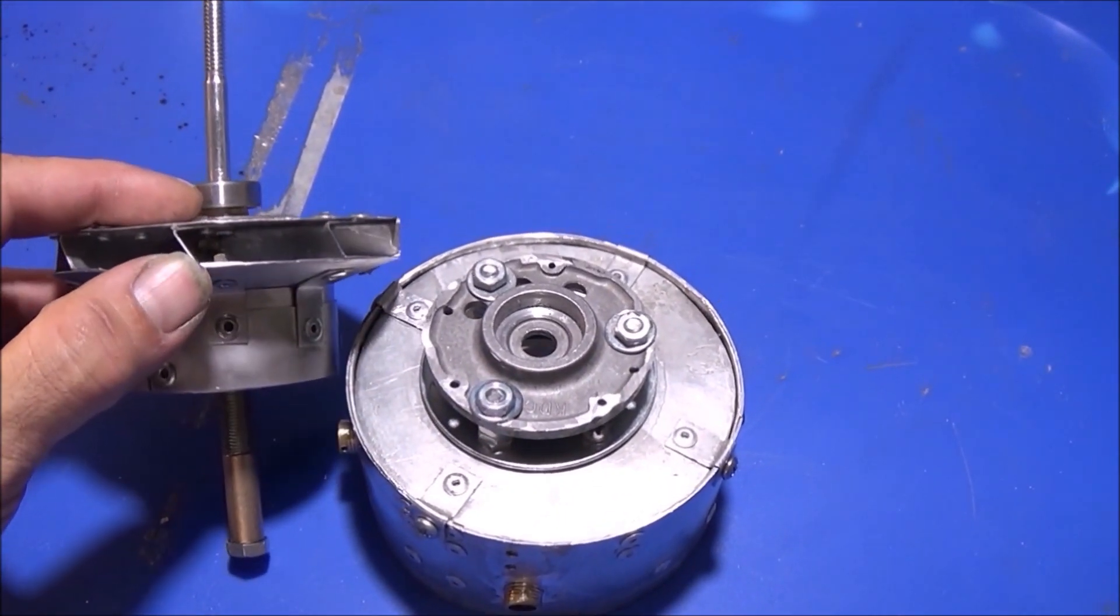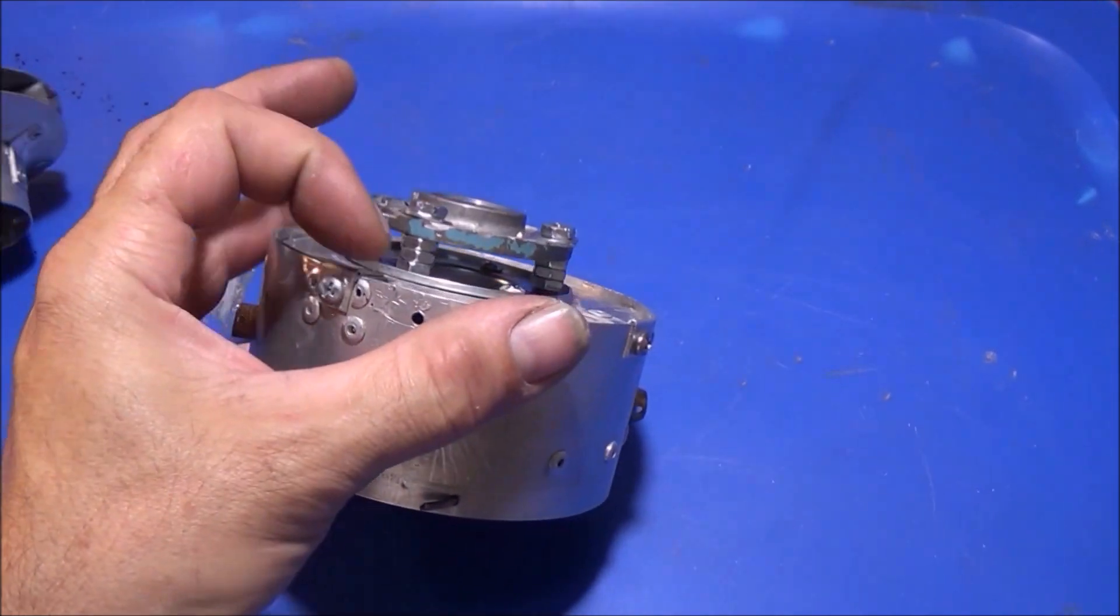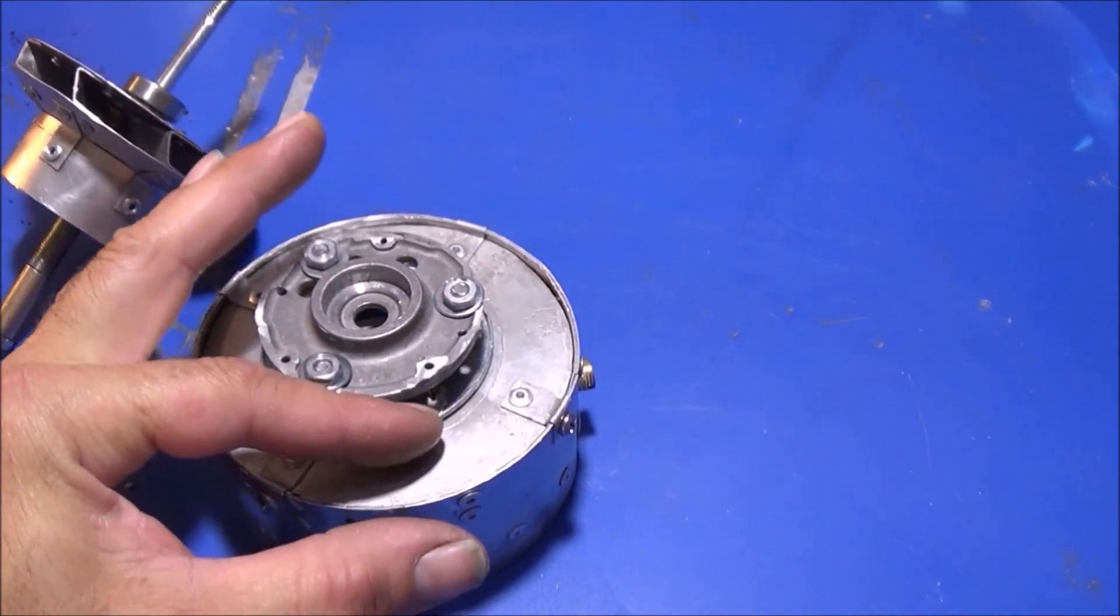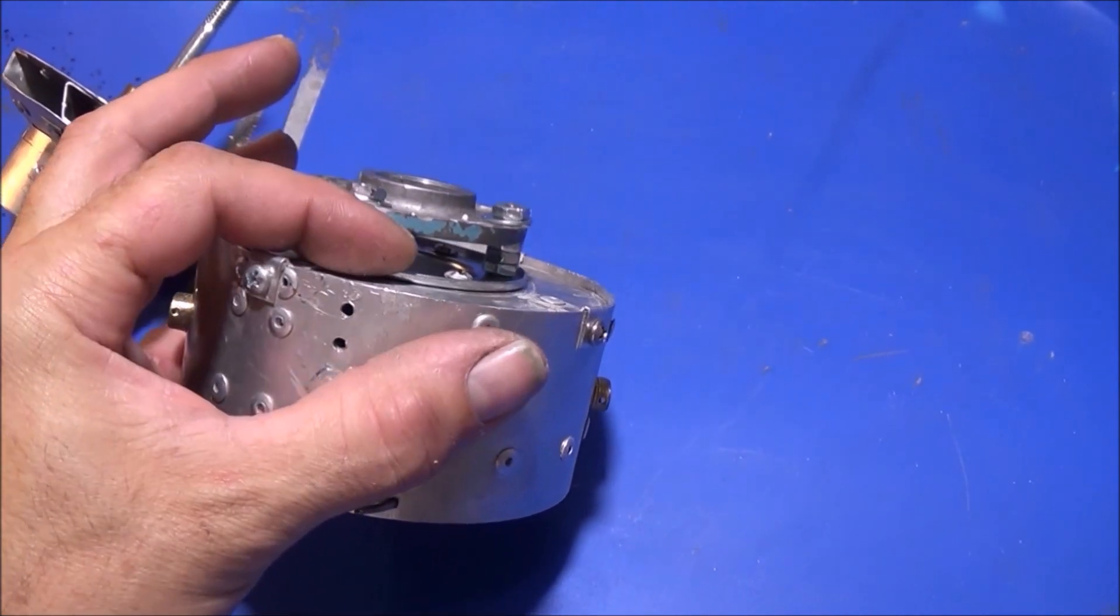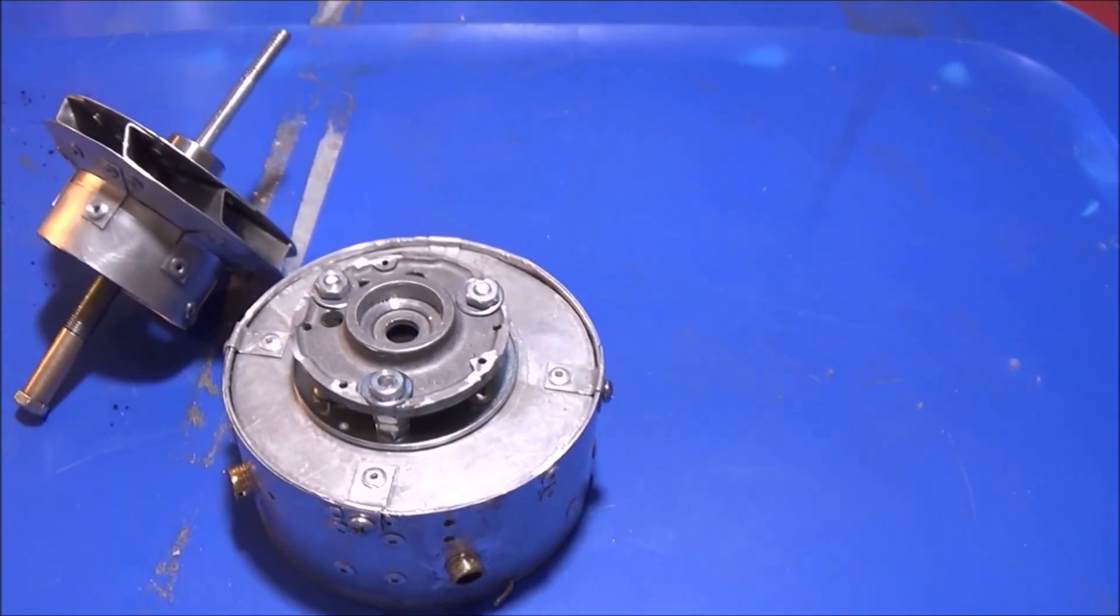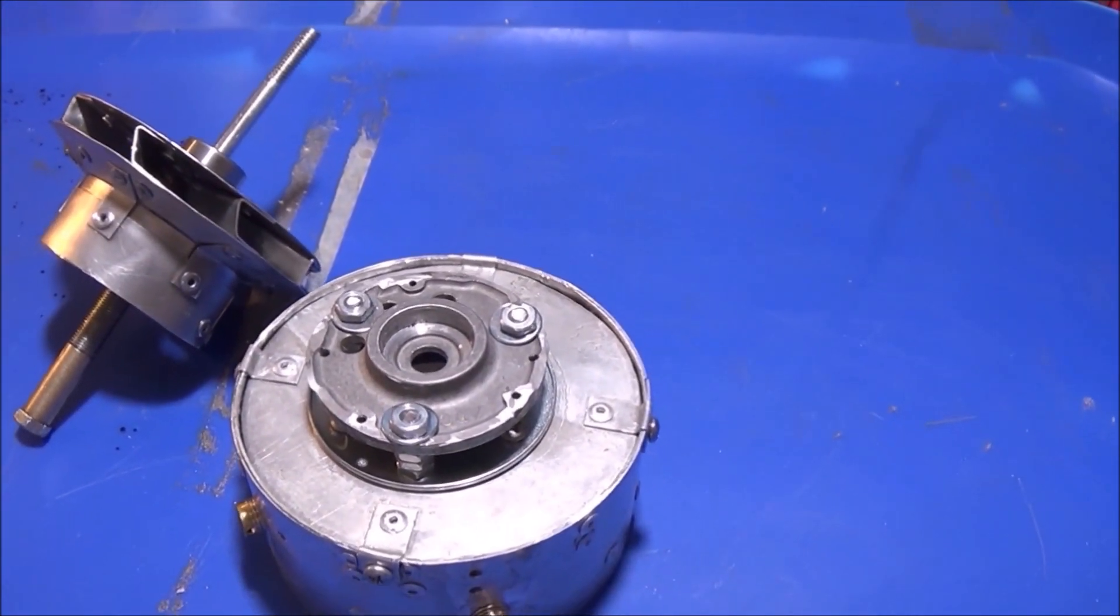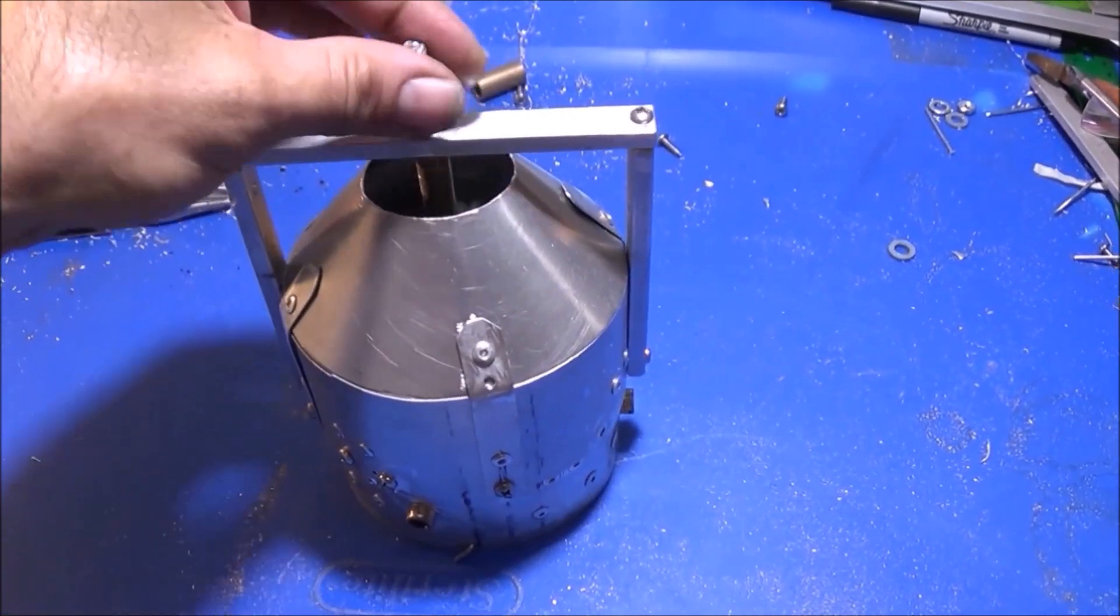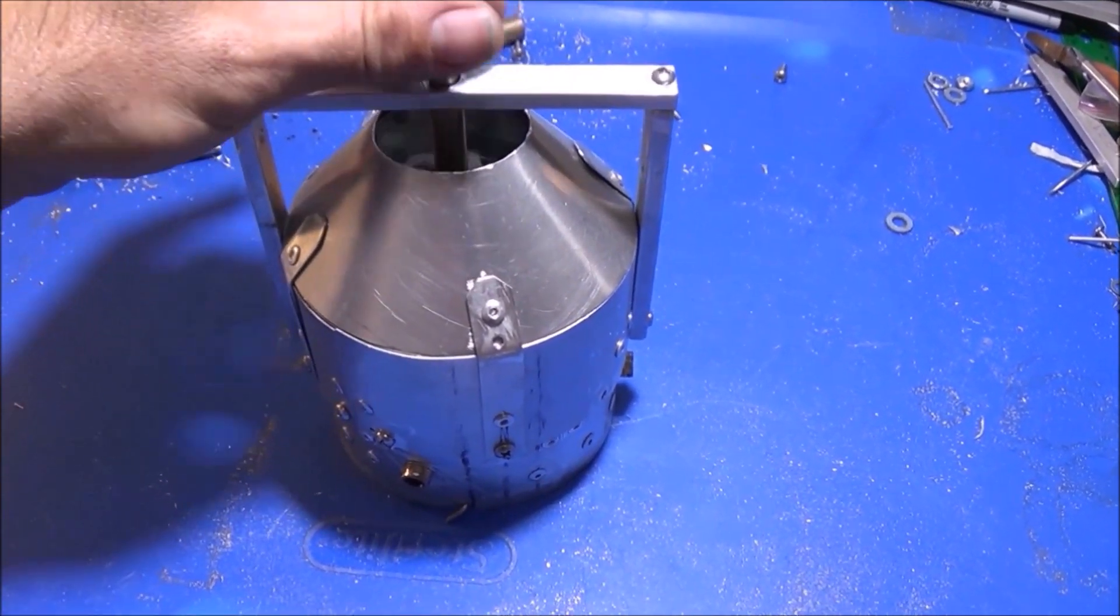That way the air will flow nice and freely right off the edge of the compressor back around. We're going to use this area as the diffuser. It's going to come back around and into our second compressor. That should give us about eight to one compression, really close to eight to one compression.